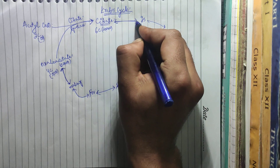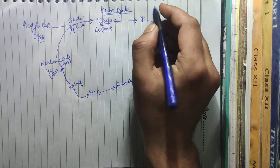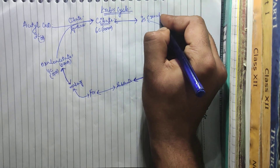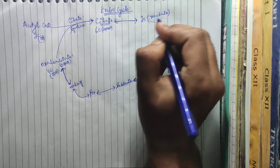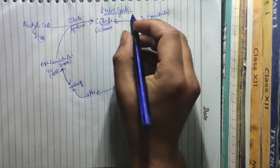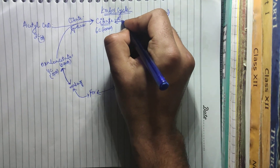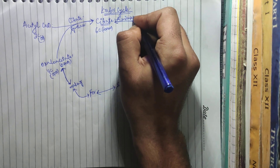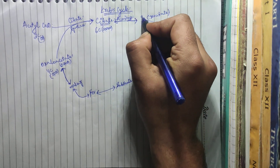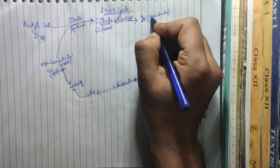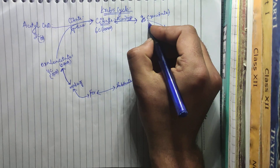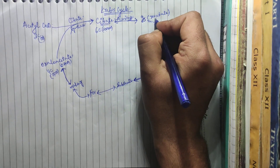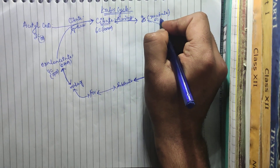Citrate gets converted into isocitrate in the presence of an enzyme, aconitase. The 'is' in aconitase can be related with isocitrate. Isocitrate is also a 6-carbon compound.